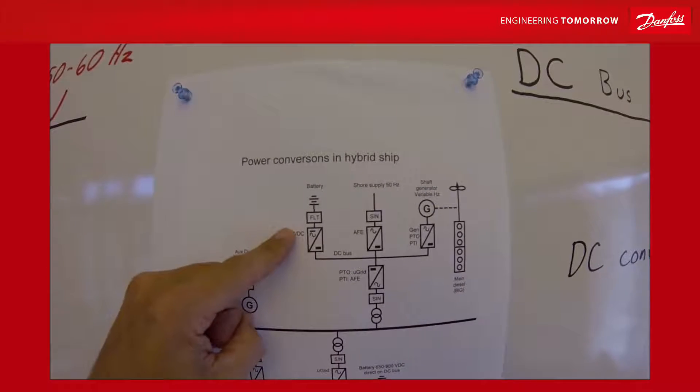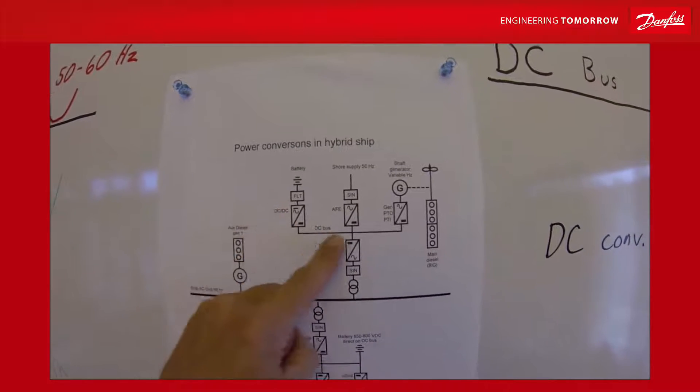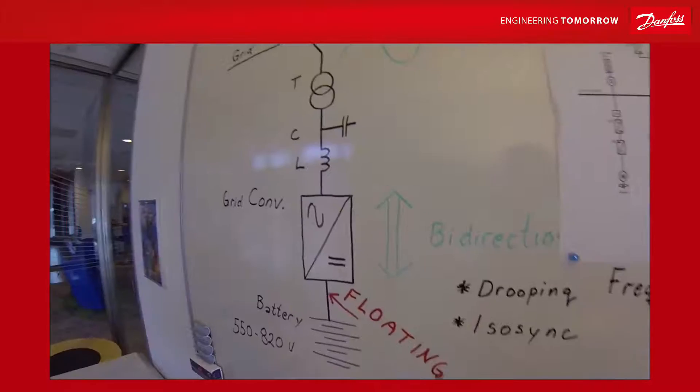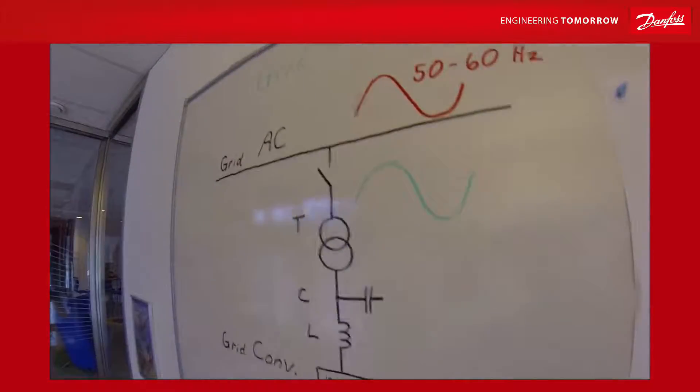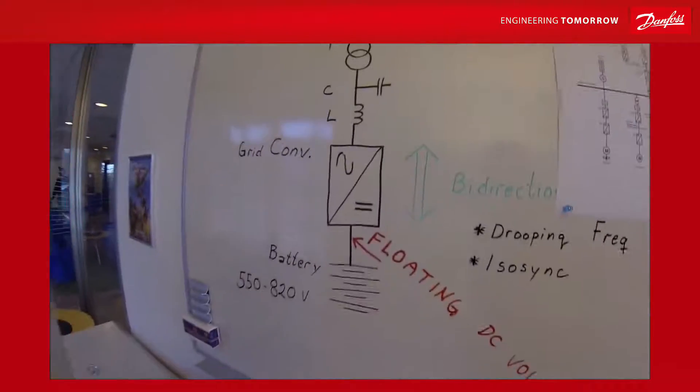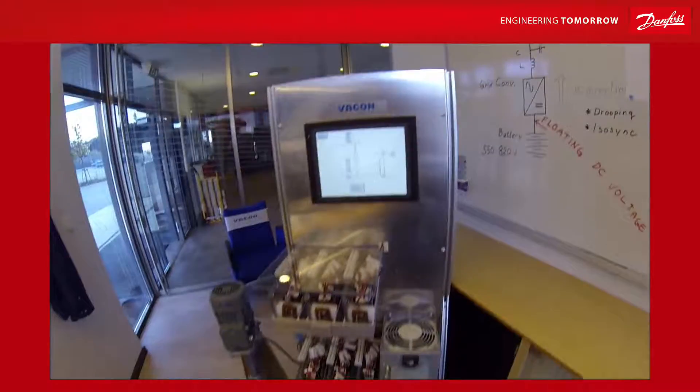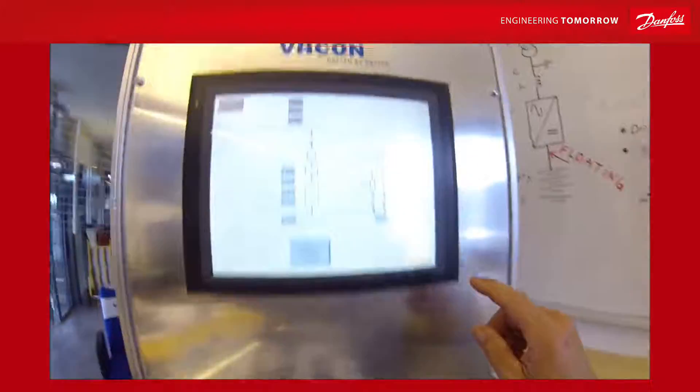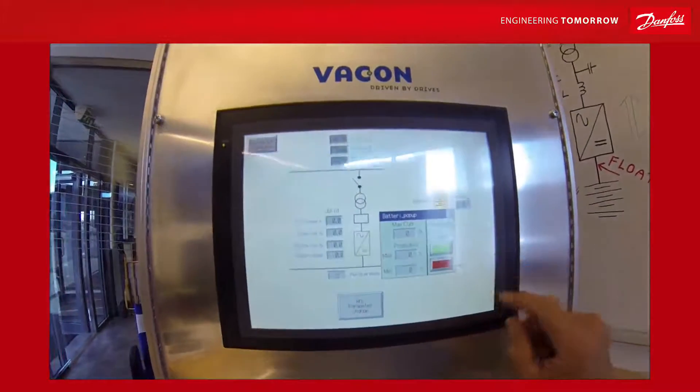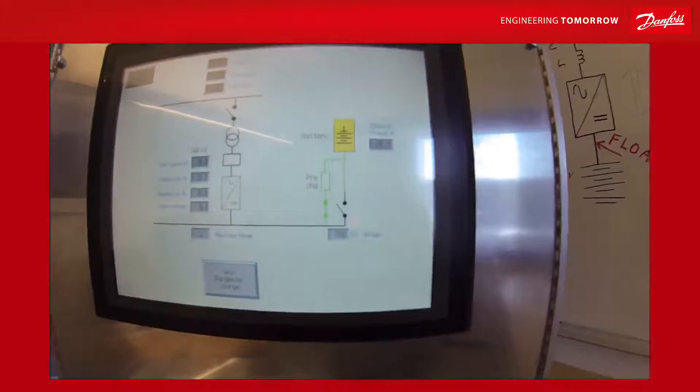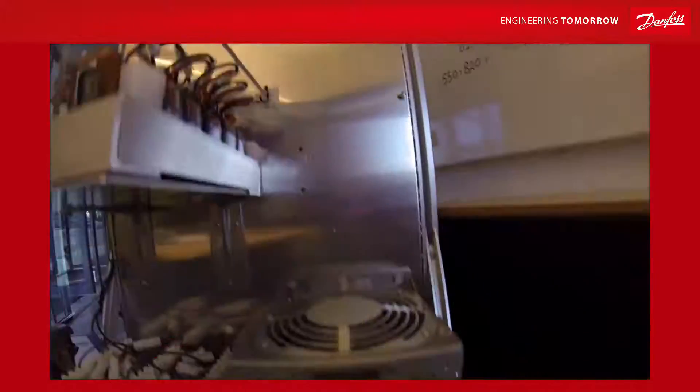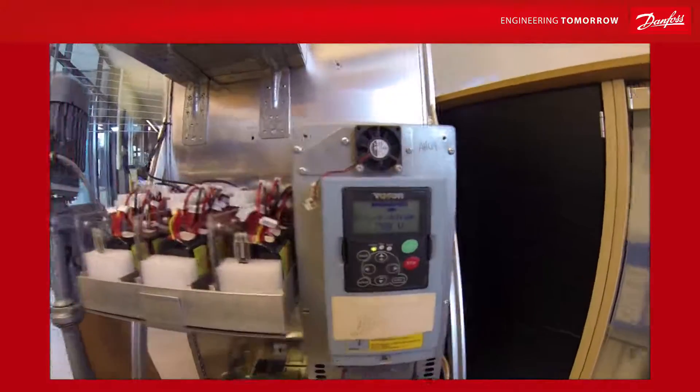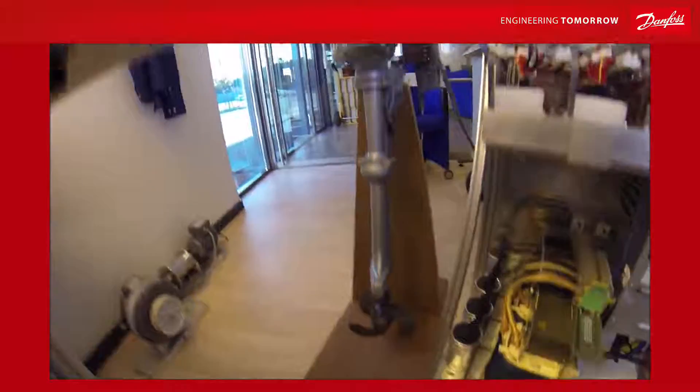In the next training course we are going to take a closer look at the grid converter. Here we have one with a battery of 750 volts. Now we have charged the DC bus and we have a consumer.